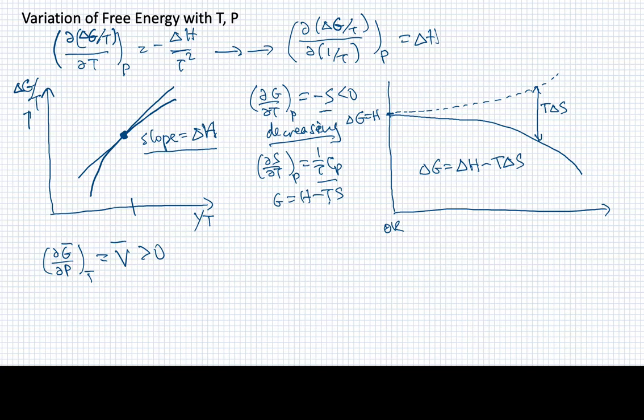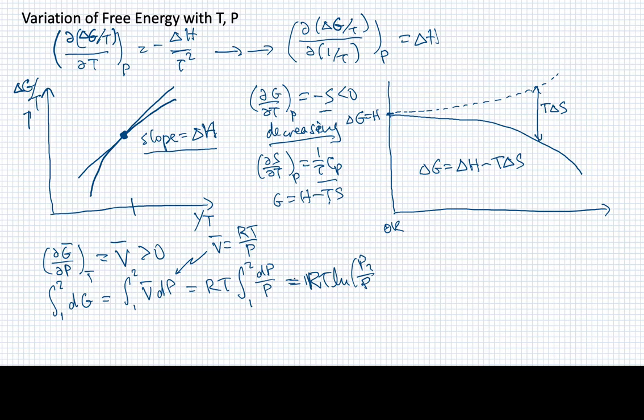So now what if I were to integrate this? So what if I were to bring the DP over? So I have a DG that I want to integrate from some point one to some point two, and that's going to be integrating from point one to point two of the molar volume DP. Now just for convenience, I will write the molar volume as equal to RT over the pressure. So that I can now rewrite this as RT times the variation from point one to point two of DP over P. Now I could just go ahead and write this out. I mean, I know that the result is going to be RT log of P2 over P1.